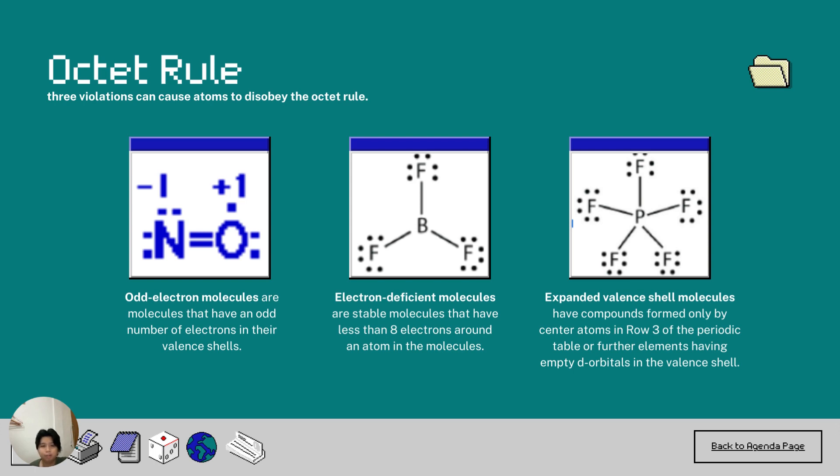Three violations can cause atoms to disobey the octet rule. First is odd electron molecules. These are molecules that have an odd number of electrons in their valence shells. Next is expanded valence shell molecules. These are stable molecules that have less than eight electrons around an atom in the molecules. Lastly, expanded valence shell molecules. They have compounds formed only by center atoms in row three of the periodic table or further elements having empty d orbitals in the valence shell.